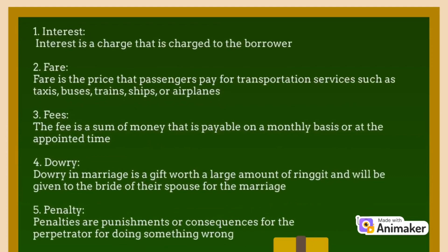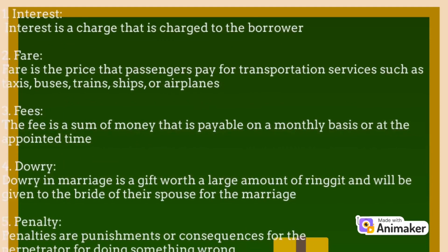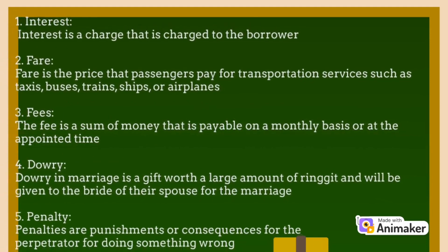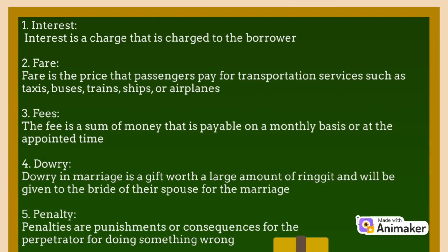Firstly, is interest. Interest is a charge that is charged to the borrower. Secondly, is fare. Fare is the price that passengers pay for transportation services, such as taxis, buses, trains, ships, or airplanes. Thirdly, is fees. The fee is a sum of money that is payable on a monthly basis or at the appointed time. Fourthly, is dowry. Dowry in marriage is a gift worth a large amount of ringgit, and will be given to the bride of their spouse for the marriage.